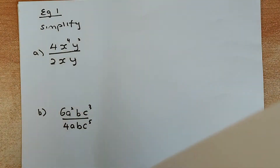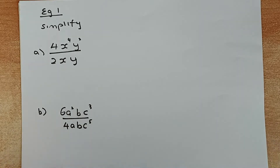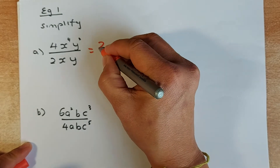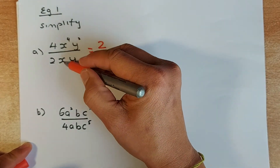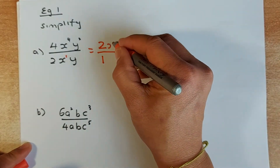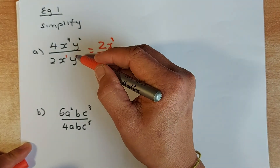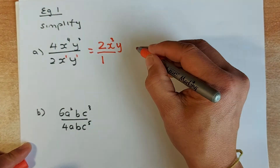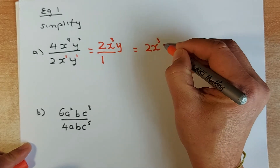The first example can be found in Year 9 and Year 10. We are going to simplify 4x to the power 4, y squared, divided by 2xy. You divide 4 by 2 to get 2 over 1. Then x⁴ divided by x¹ — subtract the powers — leaves x³. And y squared take away y¹ leaves y. So the answer is 2x cubed y.